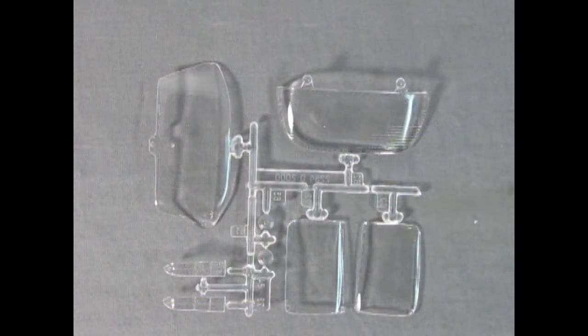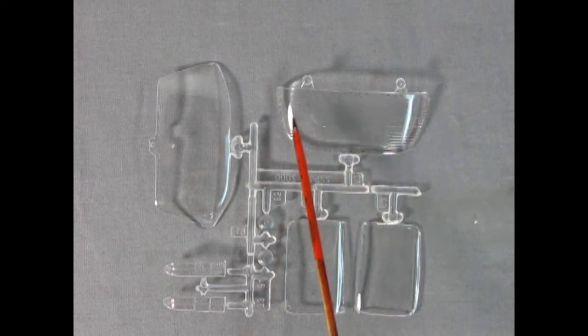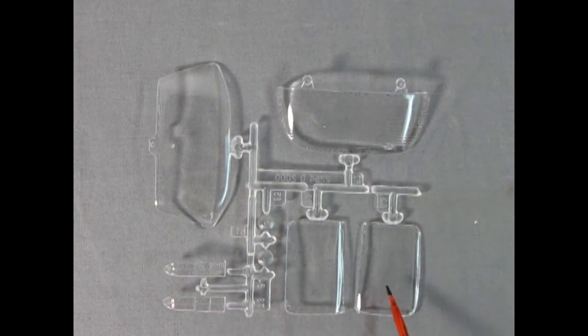Here's the glass components of the kit and Revell was really careful when they put this in a plastic bag to avoid any scratches. Here on our rear window you can see the rear window defogger lines that are etched in. There's our front glass, our rear tail lamps and the t-tops as well as our front headlights.